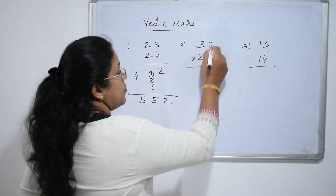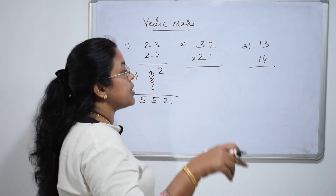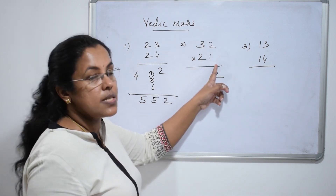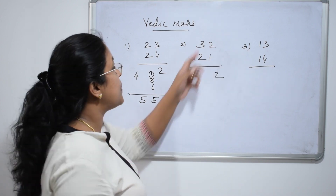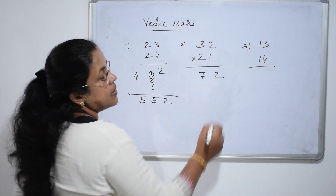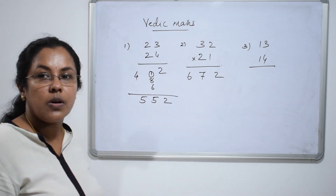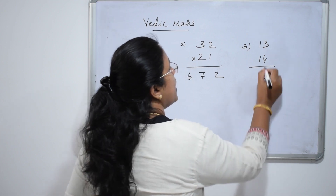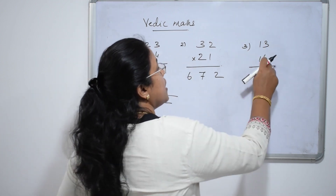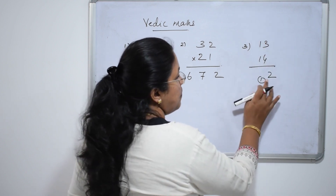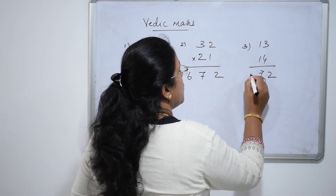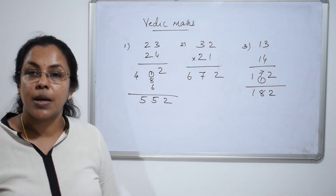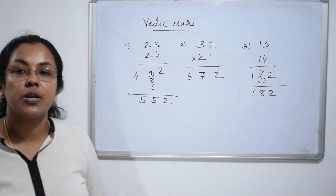One more problem. First multiply the unit digits: 2 ones are 2. Now cross multiply and add: 3 ones are 3, and 2 twos are 4. 4 plus 3 is 7. Then 3 twos are 6. Next: 4 threes are 12, carry over 1. 4 ones are 4, 3 ones are 3. 4 plus 3 is 7, plus 1 is 8. 1 into 1 is 1. The final answer is 182. Keep on practicing — it will improve your speed and accuracy.